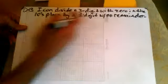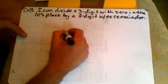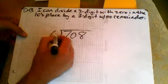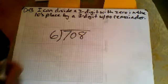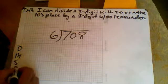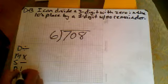708 divided by six. Remember the steps, dirty monkeys smell bad. Divide, multiply, subtract, and bring down.